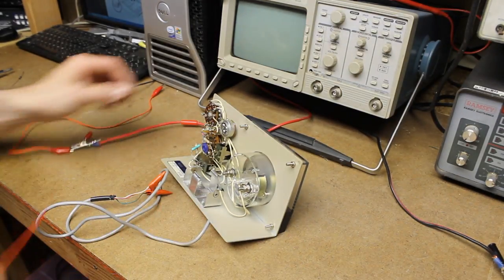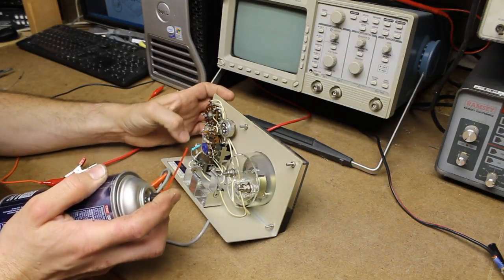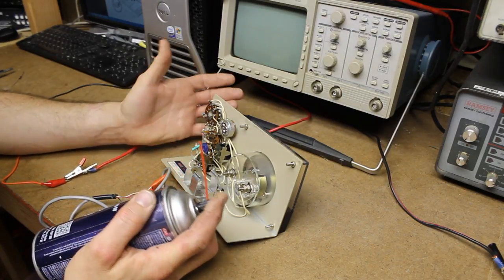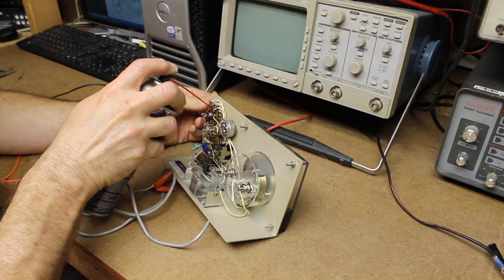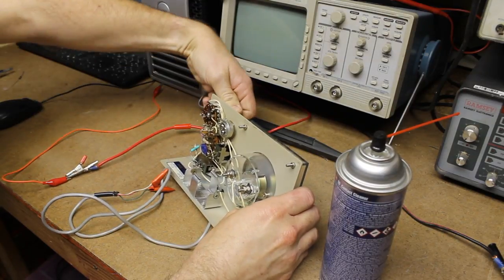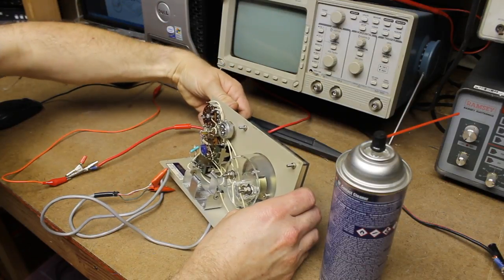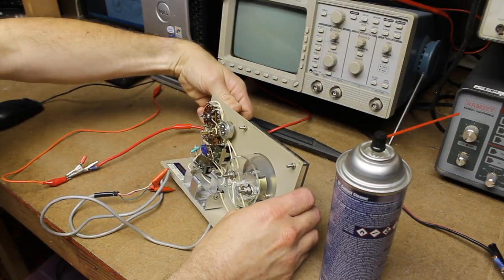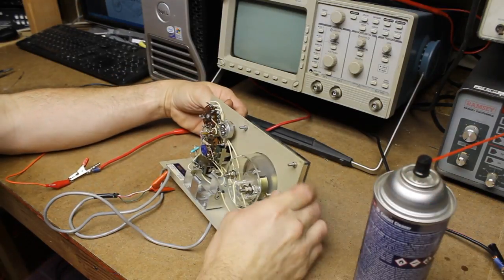We have precision resistors, diode, disc capacitor. Let's go ahead and put a little contact cleaner on that switch and we'll exercise it a bit. Very tarnished, so it may take a little bit more attention than just spraying it with contact cleaner.